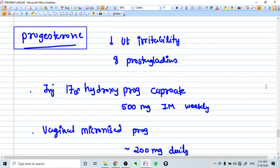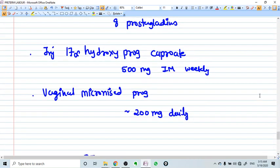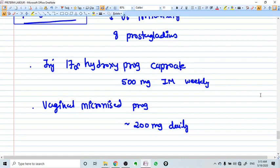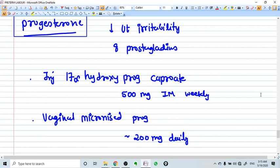Progesterone also acts as a uterine relaxant. It prevents unnecessary prostaglandin into the uterus, so it is also used. Injection 17-alpha hydroxyprogesterone caproate 500 mg IM weekly, or vaginal micronized progesterone pessaries of 200 mg daily. This we can use to prevent preterm labor. If we know there is high risk of preterm labor or history of preterm labor in previous pregnancy, we should use progesterone up to 36 weeks even.